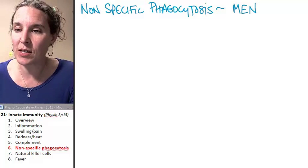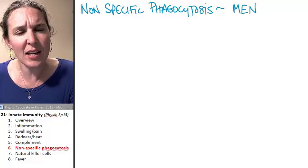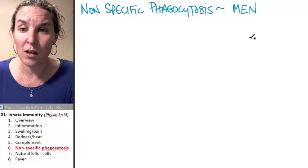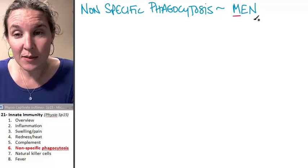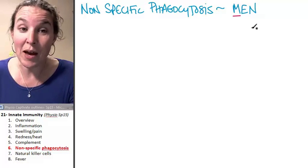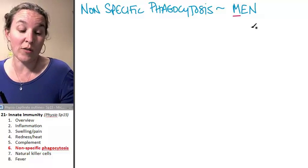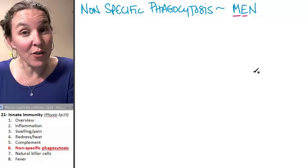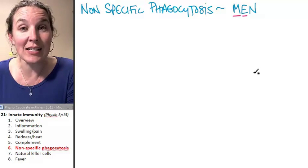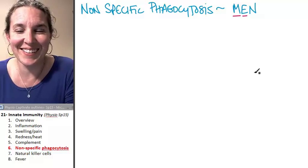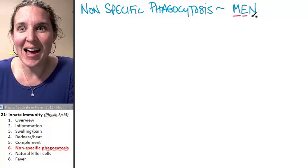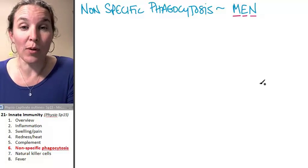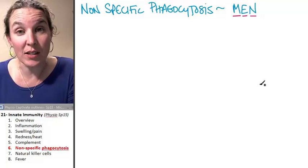For nonspecific phagocytosis, we should think about who does this — who would eat just anything that comes along? Well, the men do: the monocytes or macrophages, when monocytes (white blood cells) move out of the bloodstream and into the tissues; eosinophils, another form of phagocytotic white blood cell; and the neutrophils, who are also capable of nonspecific phagocytosis.